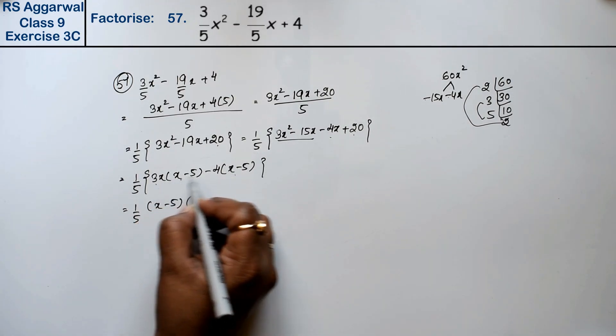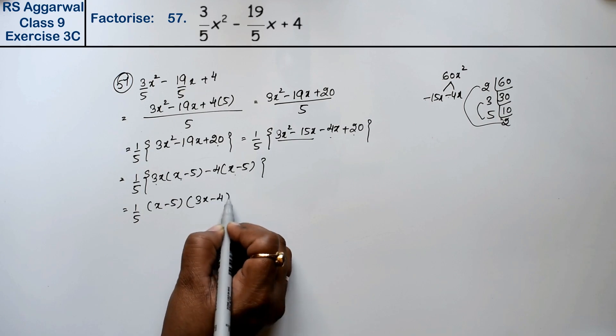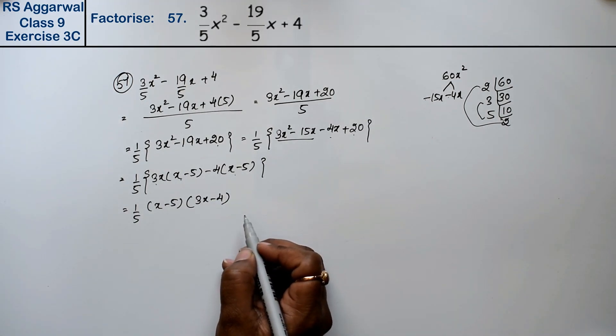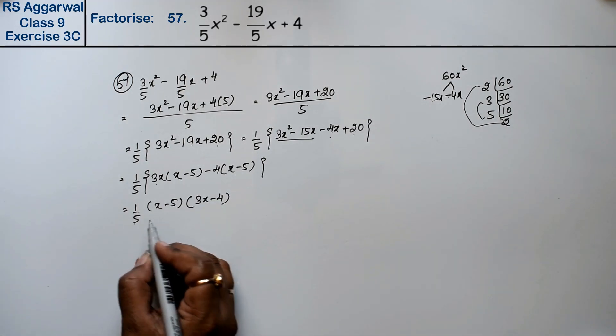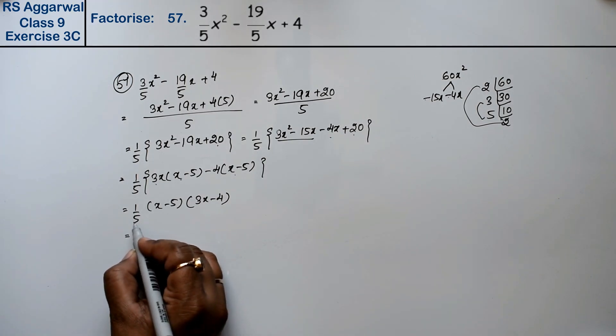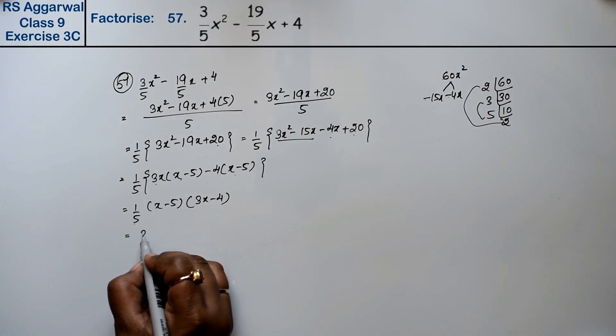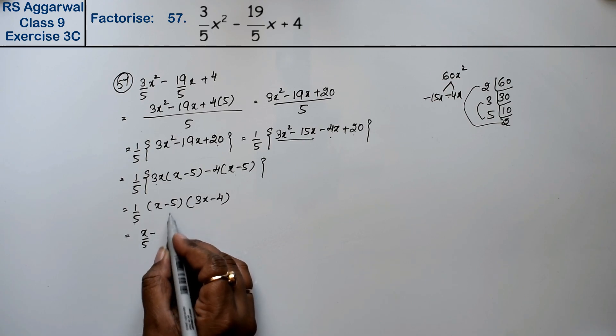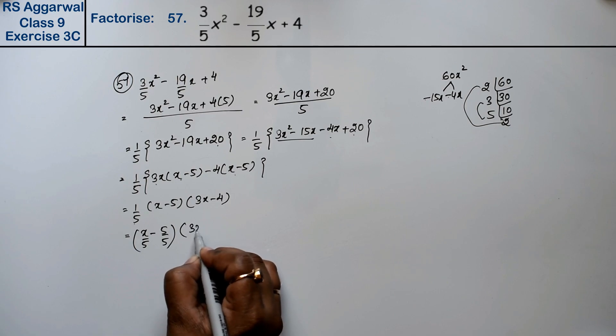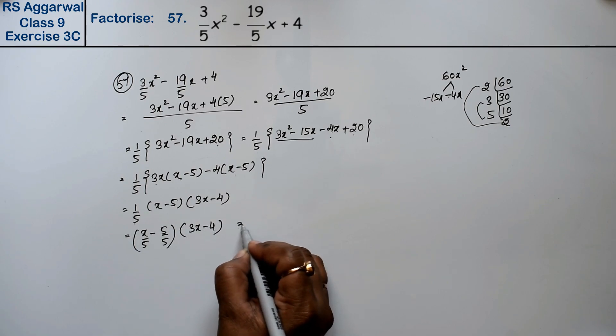So this is the answer (x - 5). If you want, you can write it as is, or you can multiply it inside. So x/5 minus 5/5 and (3x - 4), which can be written as x/5 minus 1 and (3x - 4).